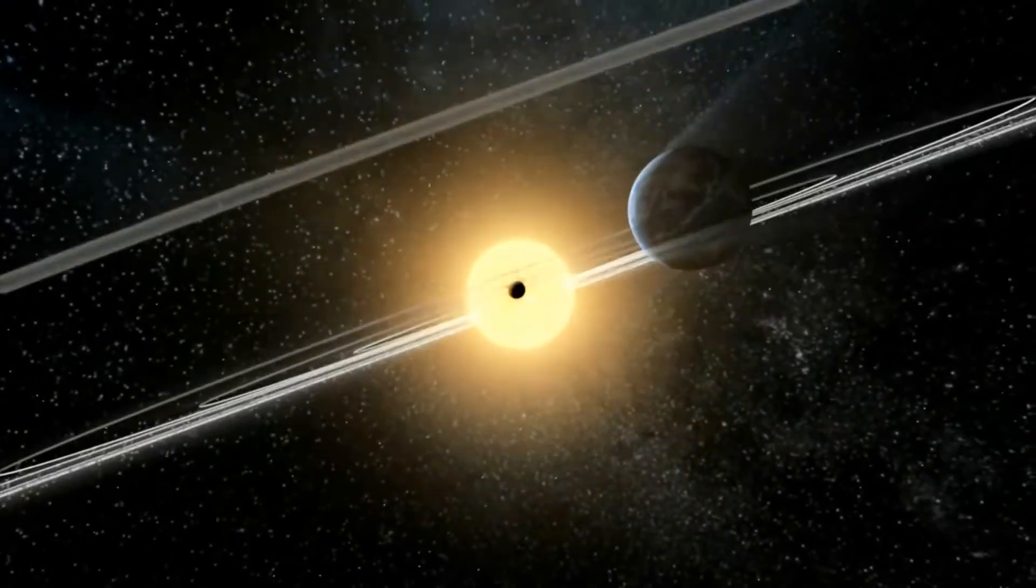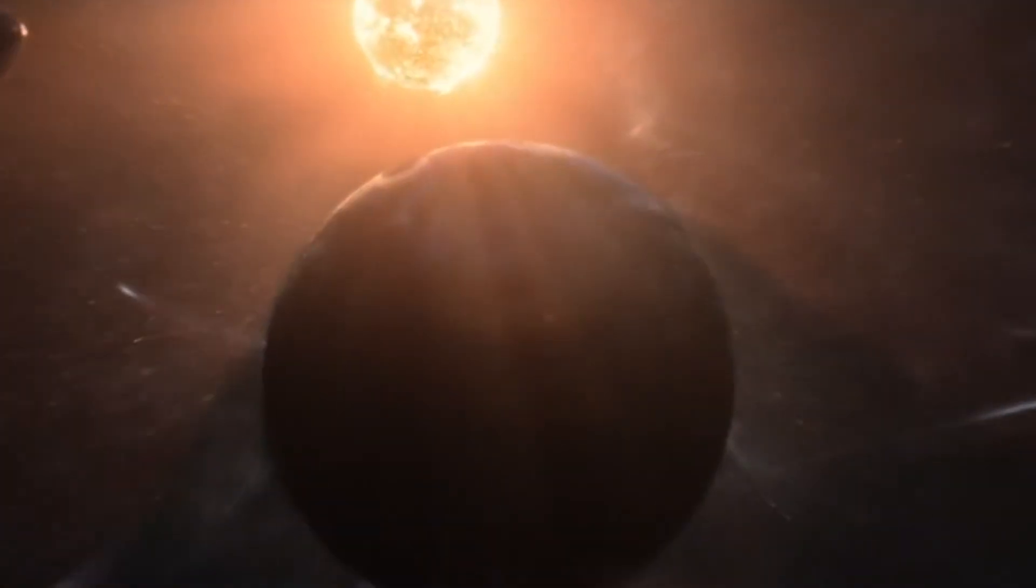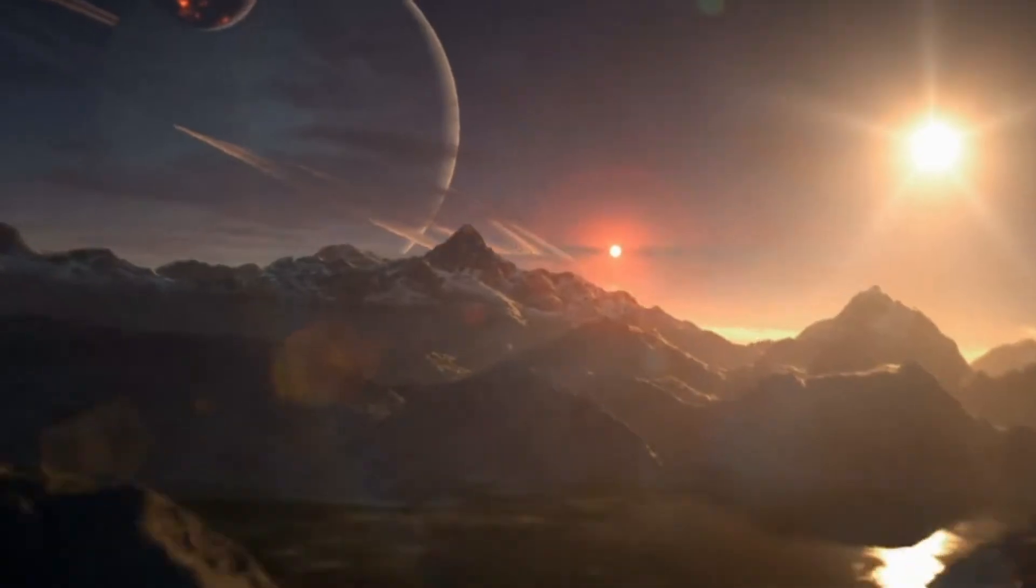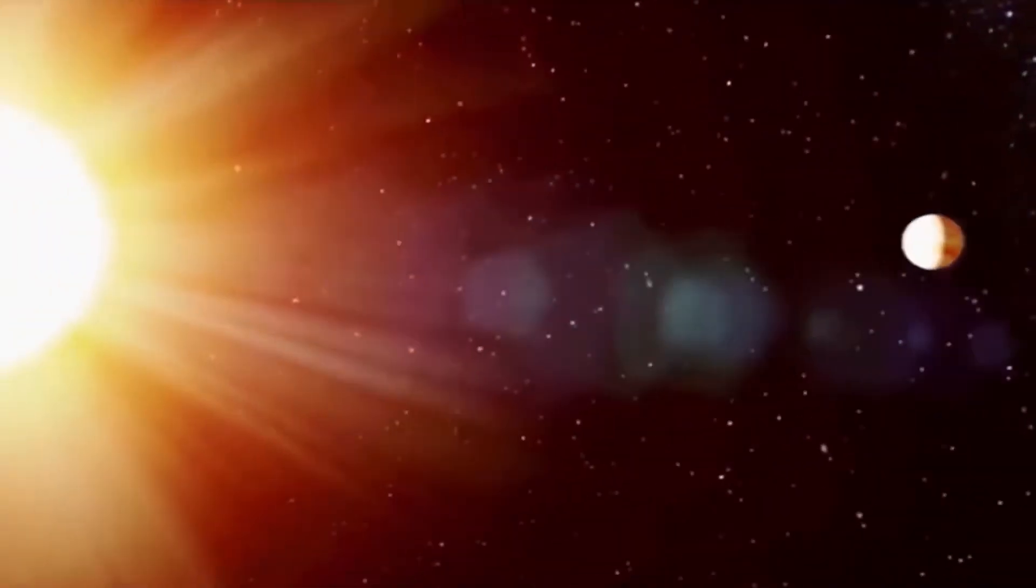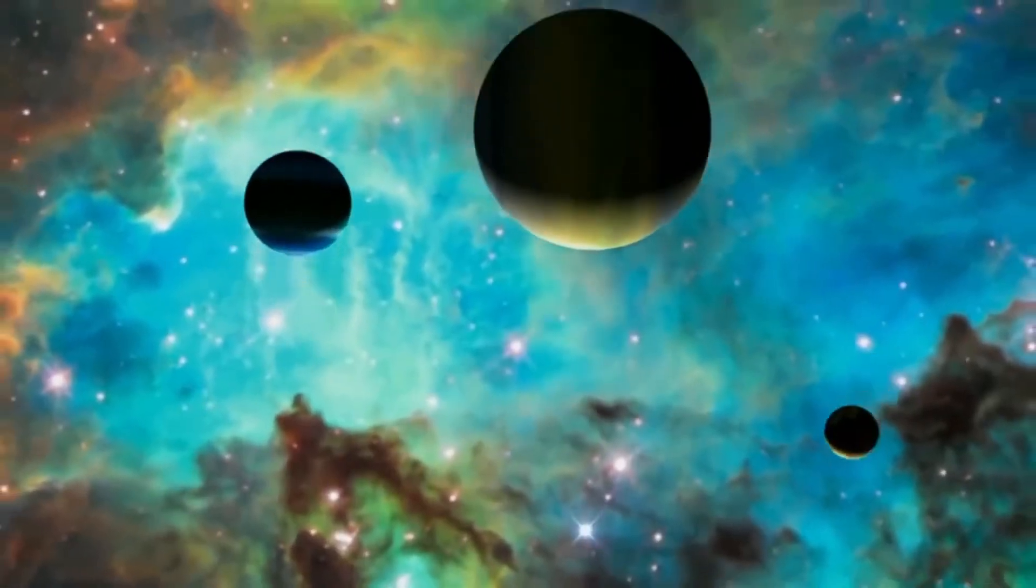About half of all red dwarf stars have a planet in the habitable zone, with a fraction at least 5-10% for sun-like stars. But for brown dwarfs, these numbers could be below 0.5%.